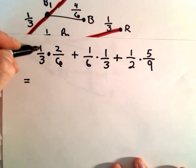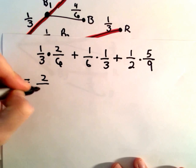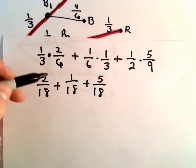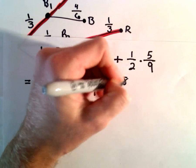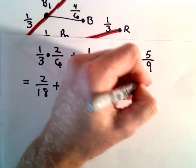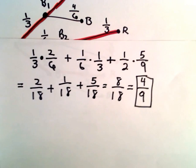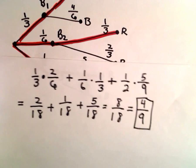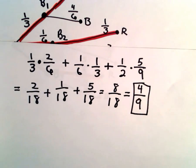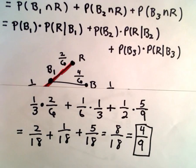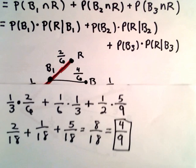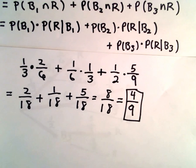Let's do the arithmetic: one times two is two, three times six is eighteen — so two over eighteen. Then one over eighteen, plus five over eighteen. Two plus one is three, plus five is eight out of eighteen. Both are even, so dividing top and bottom by two gives four-ninths. So the probability of selecting a red coin is four-ninths — a little bit less than 50%. I'm going to do part B in a separate video, where we'll actually use Bayes' theorem to find the probability that the red coin came from the first bowl.